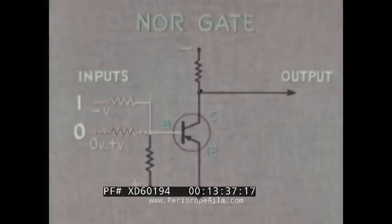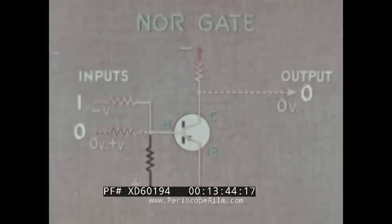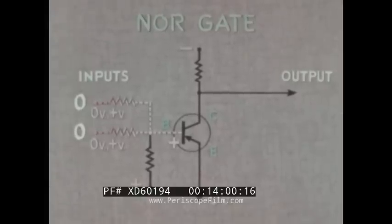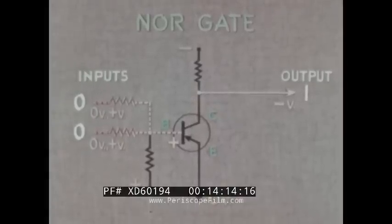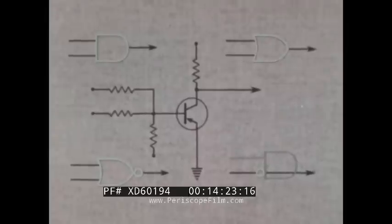If one input is one and the other zero, collector current will still flow, resulting again in zero output — one and zero inputs give a zero output. If both inputs are zero, the base is positively biased; collector current does not flow, and output voltage becomes negative, high. Result: zero and zero inputs give a one output. It is possible to build a computer using only NOR type circuits to perform AND, OR, NOR, inverter, or any other necessary logic function merely by changing the circuit constants.